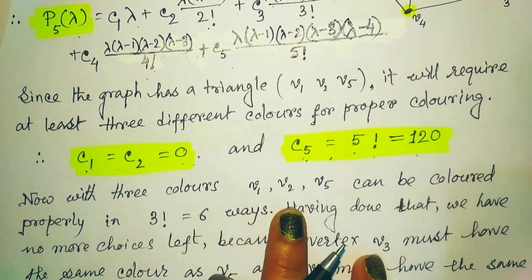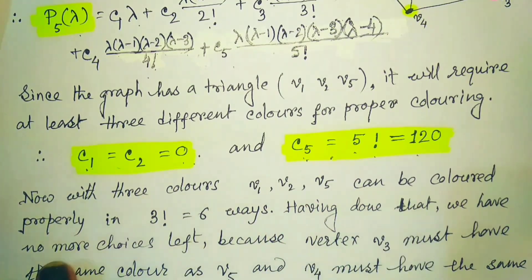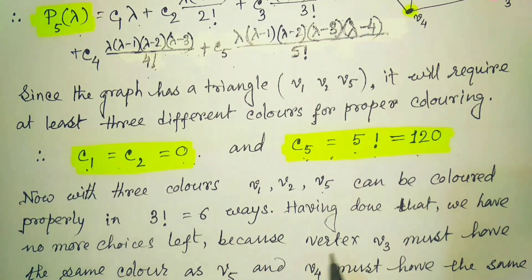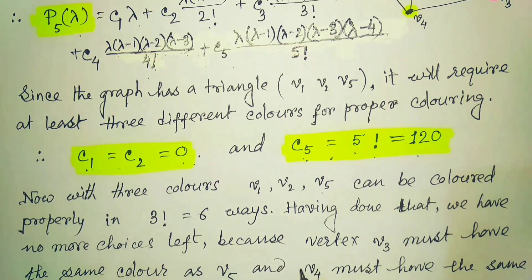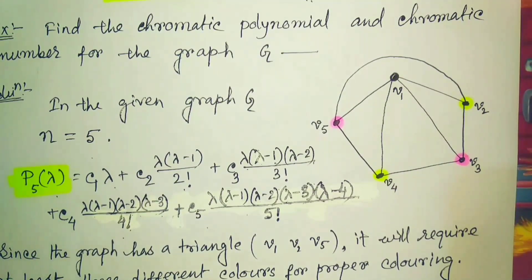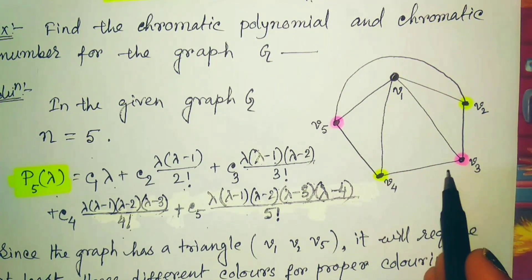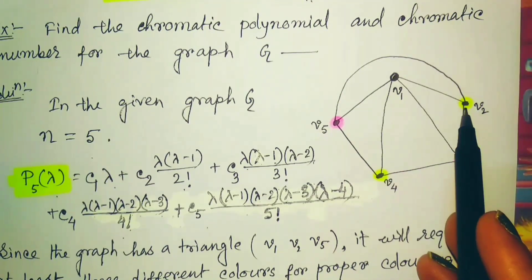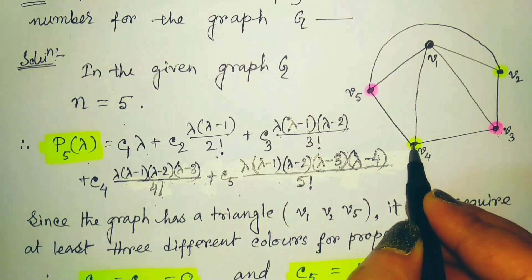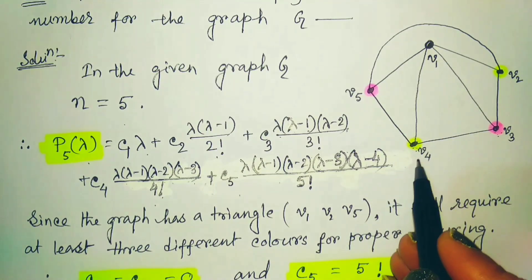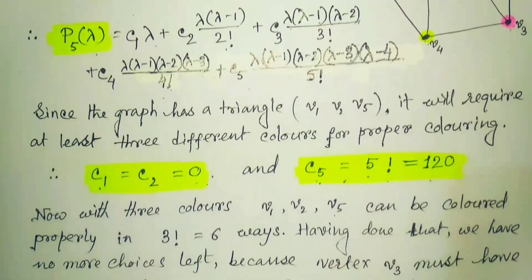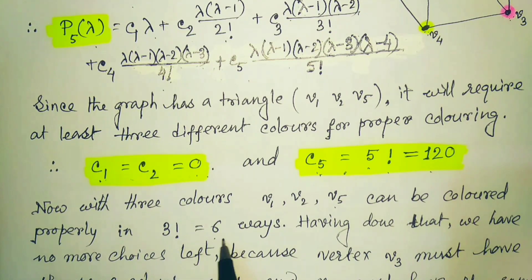With 3 colors, vertices V1, V2, and V5 can be colored properly in 3! ways. Having done that, we have no more choices left because vertex V3 must have the same color as V5, and V4 must have the same color as V2. Just look at the graph: V3 is adjacent to V1 and V2, so V3 should have the same color as V5. And V4 is adjacent to V5, V3, and V1, so its color should be the same as V2. So, we required only 3 colors to color this graph properly, and with 3 colors, there are 6 ways to color the graph.